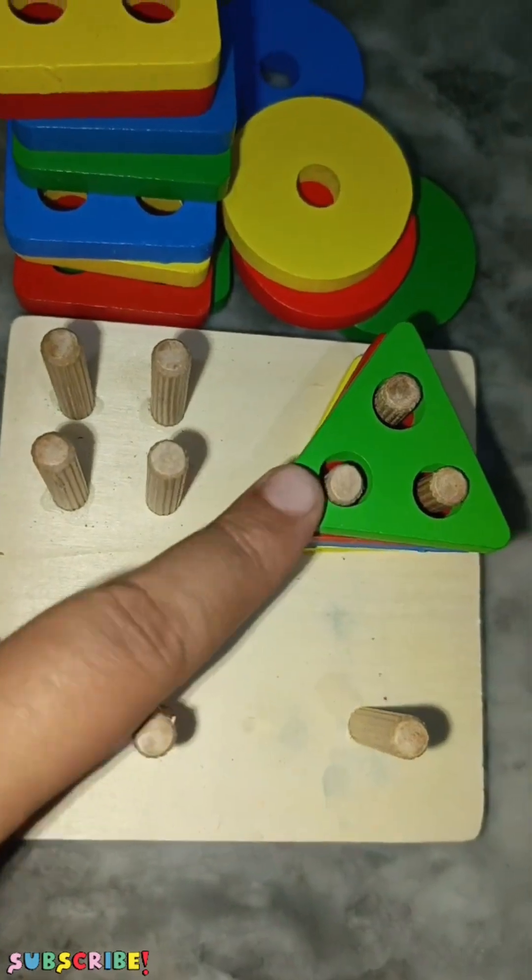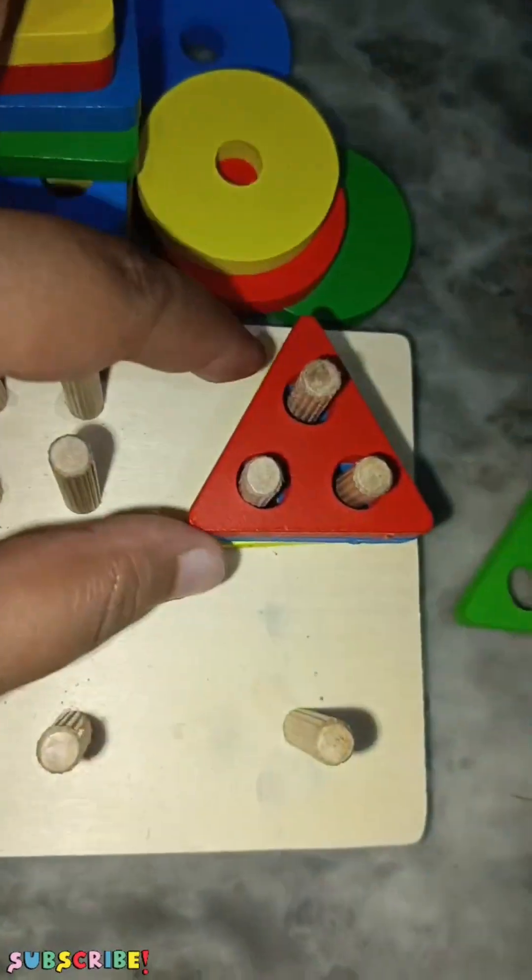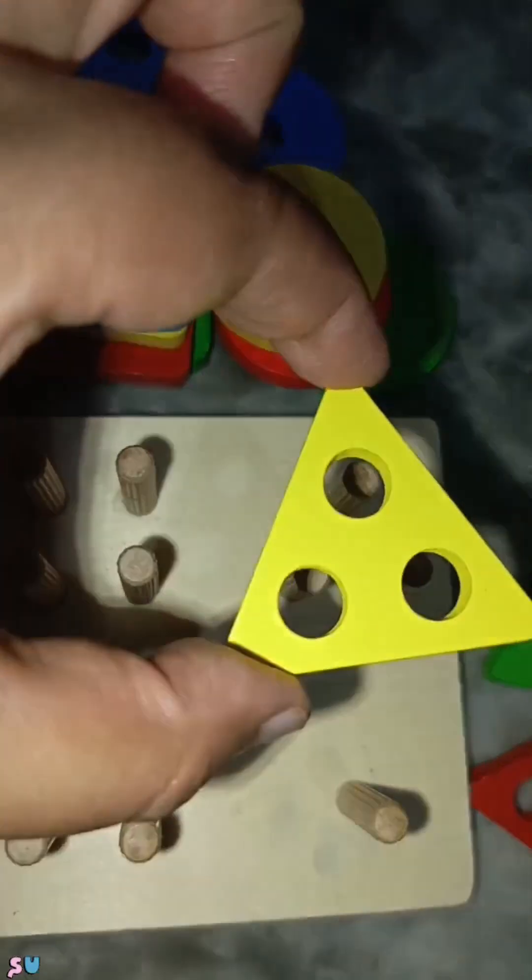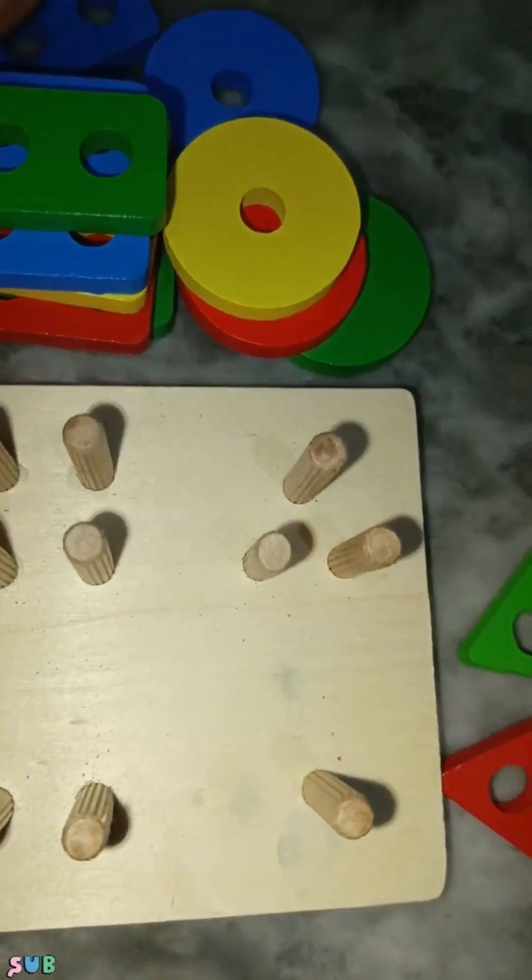This is triangle. Green triangle. Red triangle. Blue triangle. And yellow triangle. Toh chalyein.